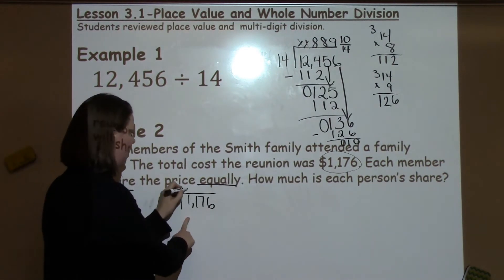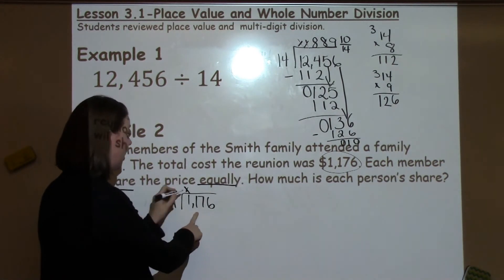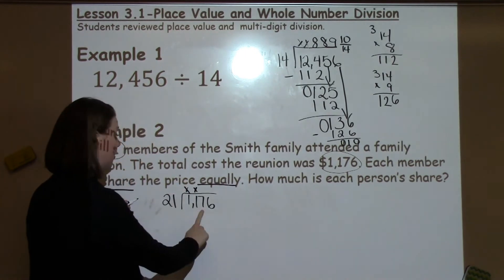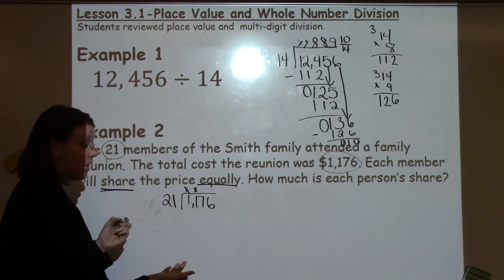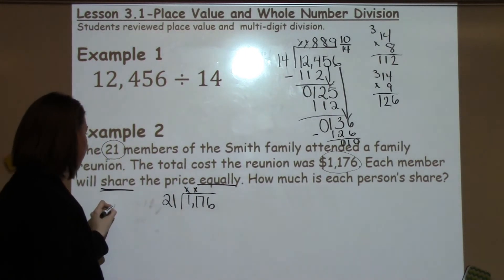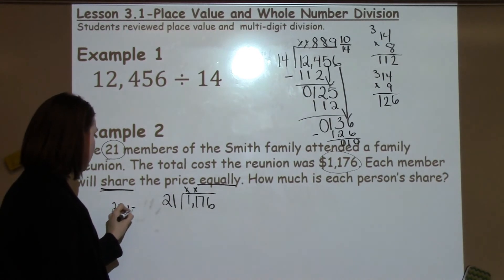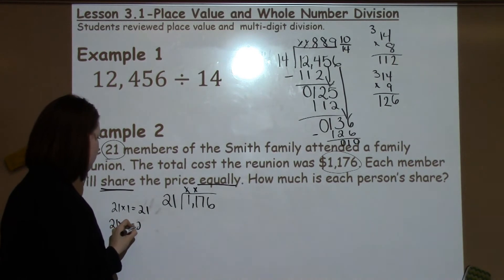To set up this problem, what students are going to do is they're going to take 1,176 divided by 21. Can 21 go into 1? It cannot. Can 21 go into 11? It cannot. Can 21 go into 117? It can, but I need to figure out how many times. I always think 21 times 1 is 21, and I always think 21 times 10 is 210.